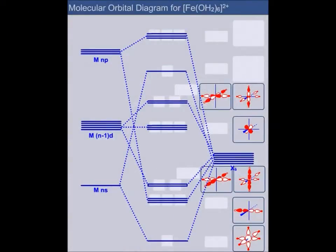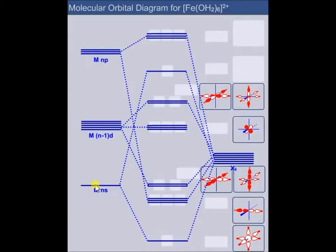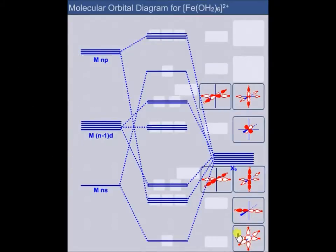Here I would like to show you the MO diagram for an octahedral iron 2 plus complex, iron 2 plus with six water molecules. The most simple interaction is the combination of the metal s orbital in the middle here together with the group orbital that has all ligands in the same phase.